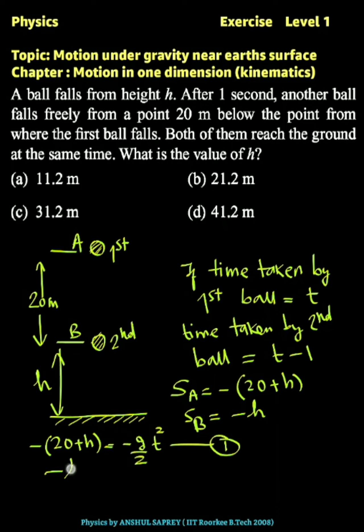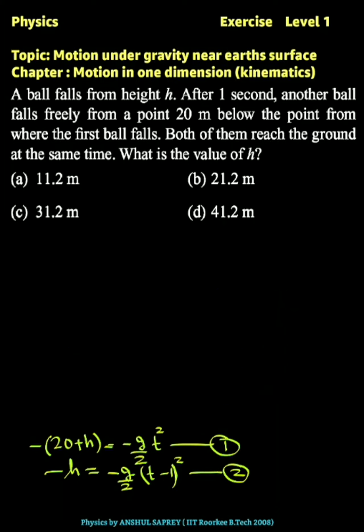And minus h equals minus g by 2 times (t minus 1) whole squared. This is for the second ball. Now remove the minus signs by canceling them.